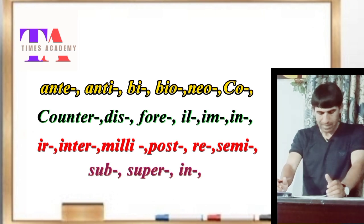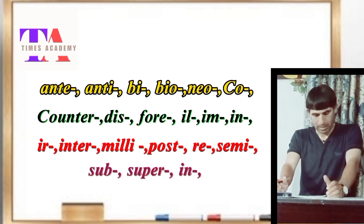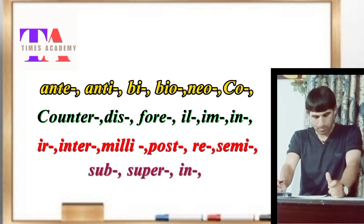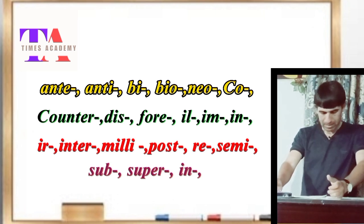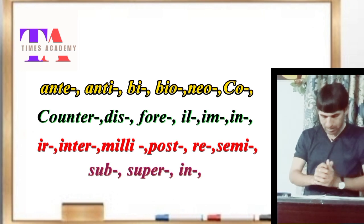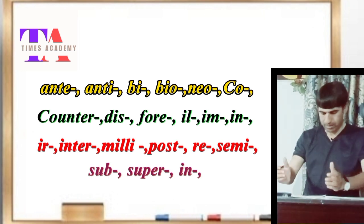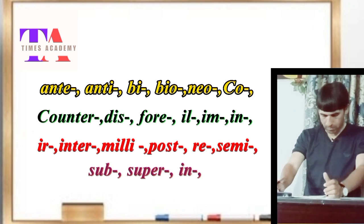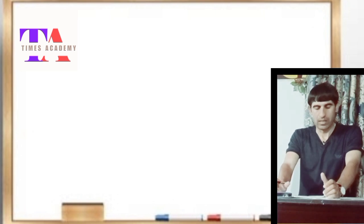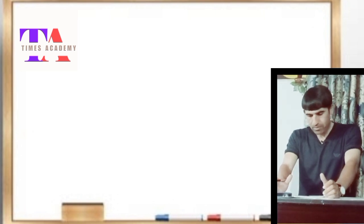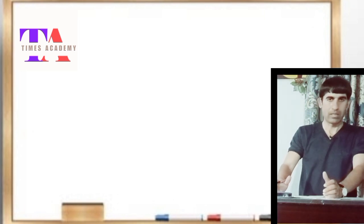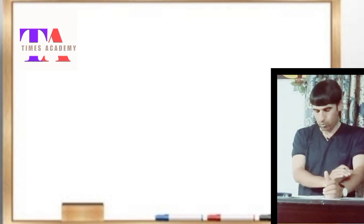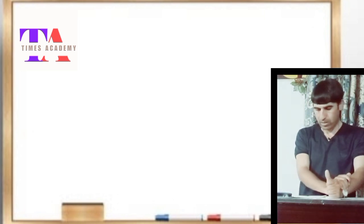Continuing the list of derivational prefixes: number 14, enter-; number 15, male-; number 16, post-; number 17, re-; number 18, semi-; number 19, sub-; and number 20, super- or an-. So we have different derivational prefixes, but specifically I have taken these 20 in this lecture.